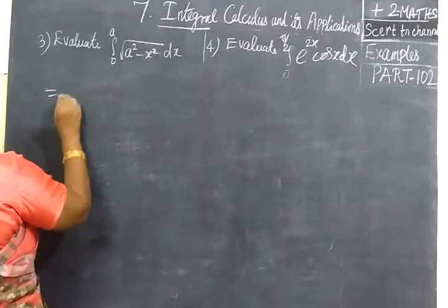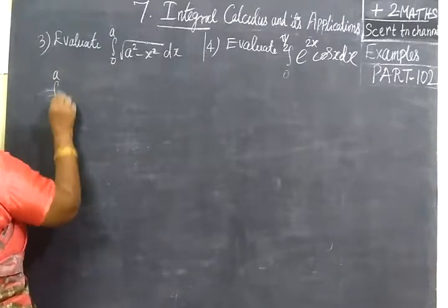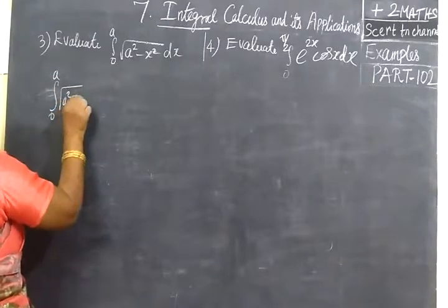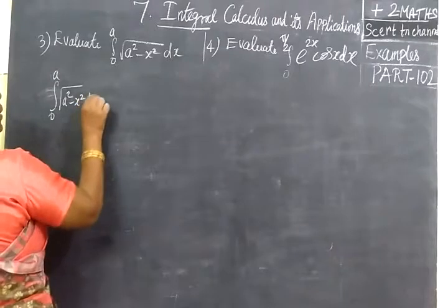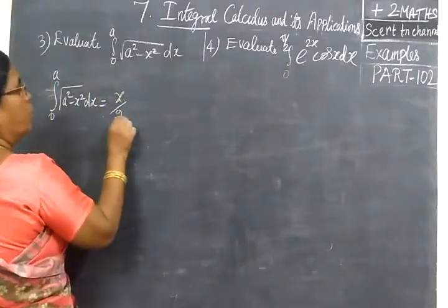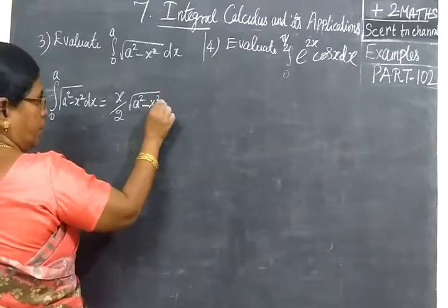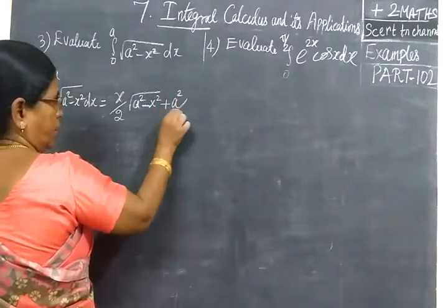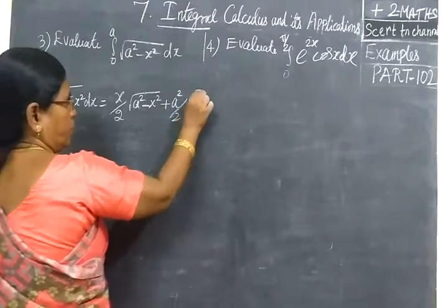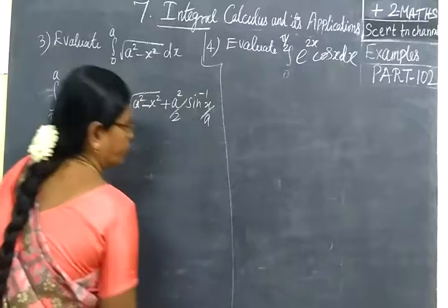So this is equal to, I will just write in the question. Integrate 0 to a, root of a² - x², dx equals x/2 root of a² - x² plus a²/2 sin inverse x/a. This is the formula.